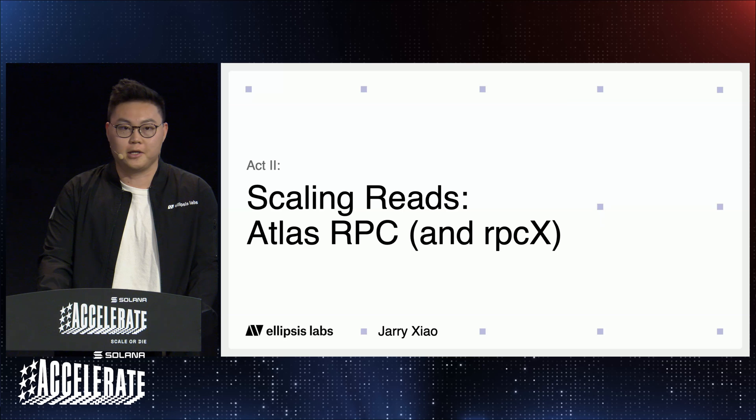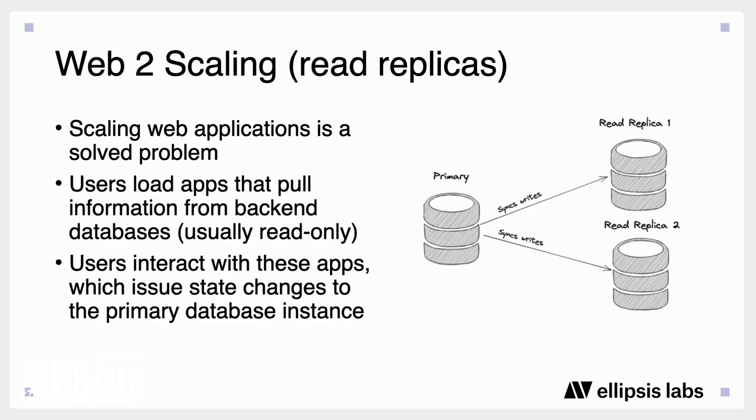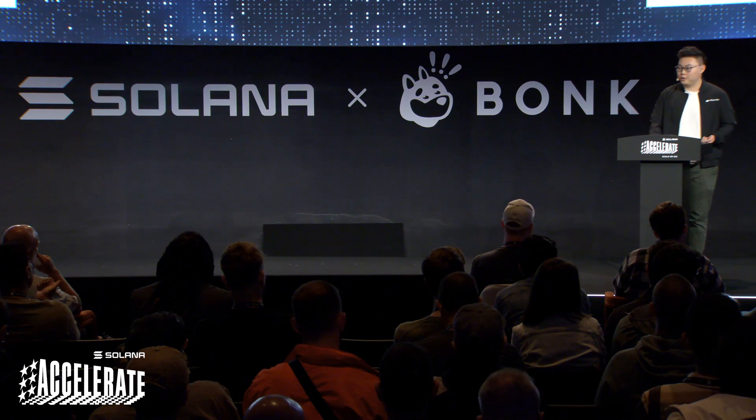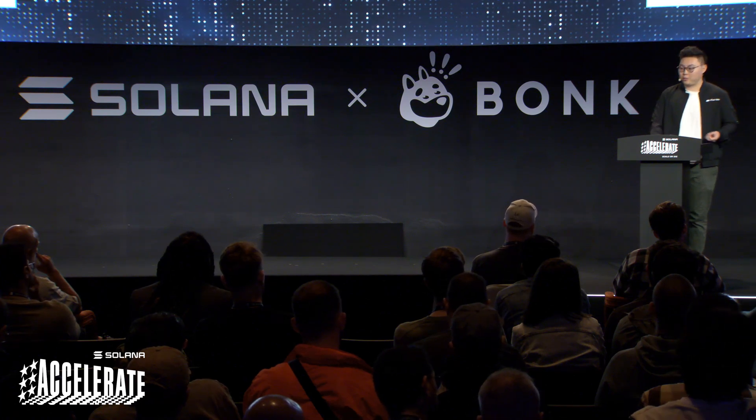The first topic is how Atlas scales reads, via the Atlas RPC and a module we're calling RPC-X. But before that, I want to talk about how you scale reads in Web 2. Scaling web applications in Web 2 is pretty much a solved problem. A user loads an application on their computer or phone, which reads information from some backend database service — usually read-only services. Then users interact with these apps, issuing state transitions to those backend databases, which go to the primary instance.